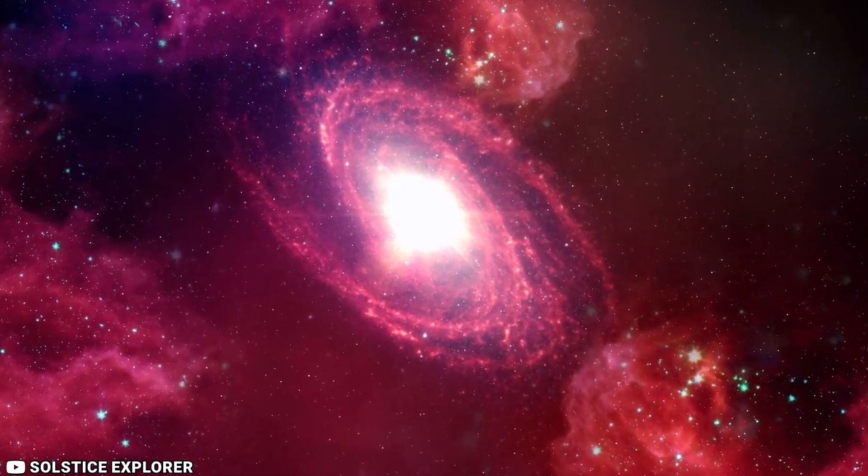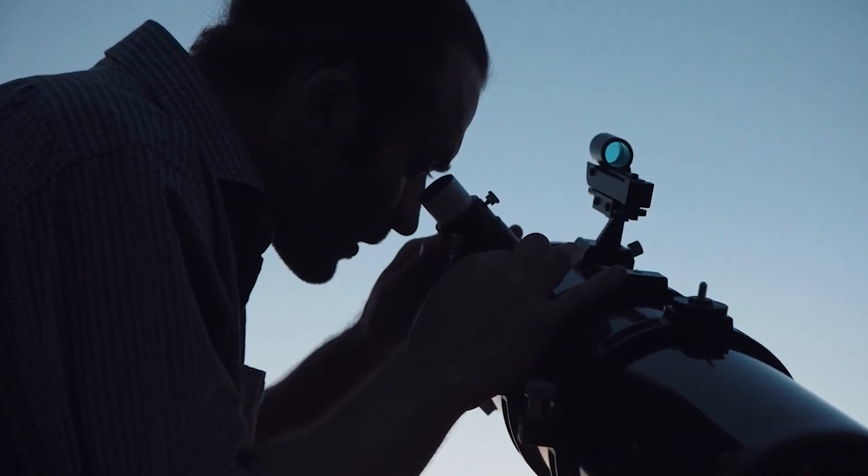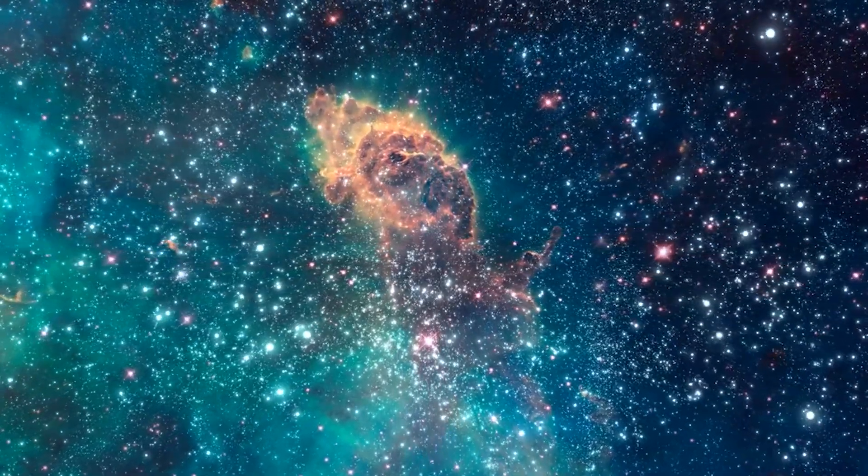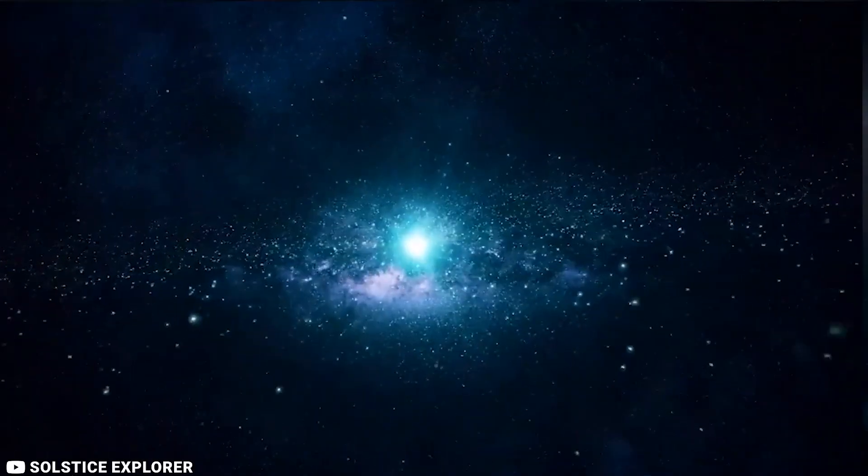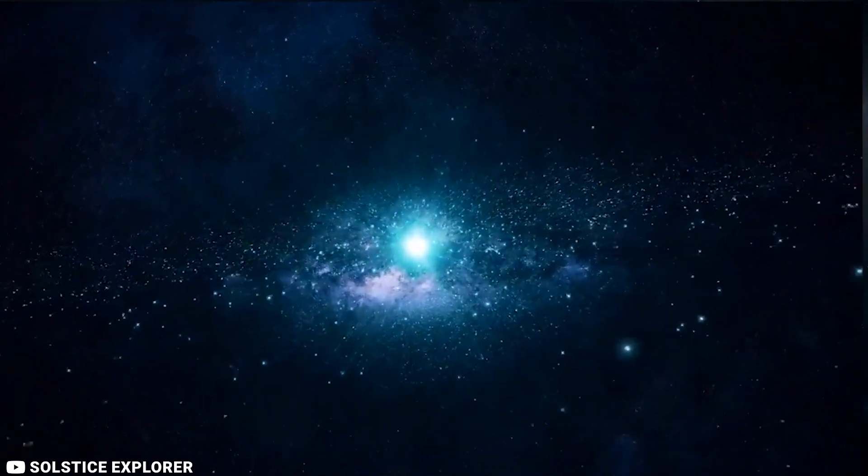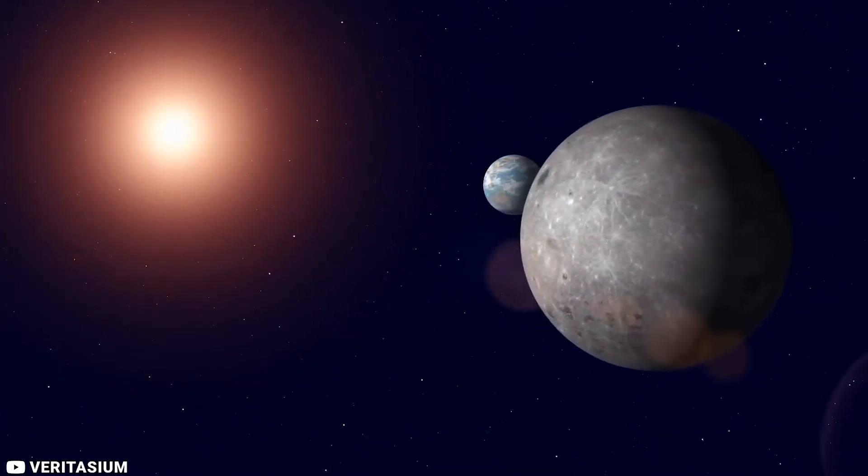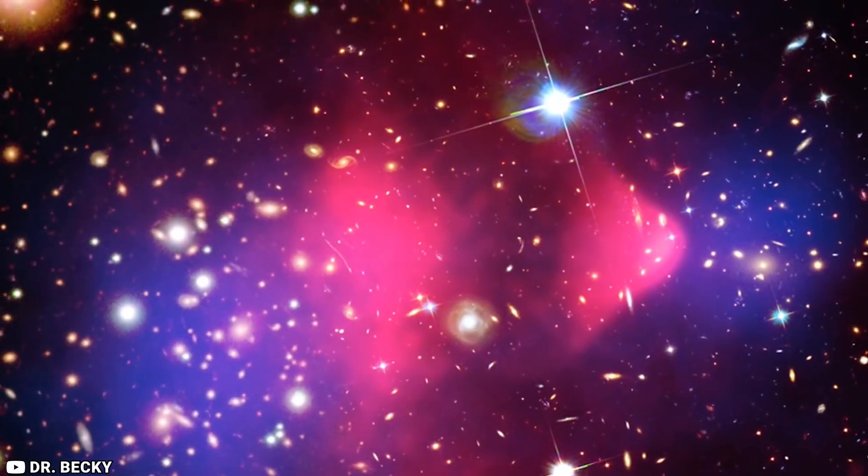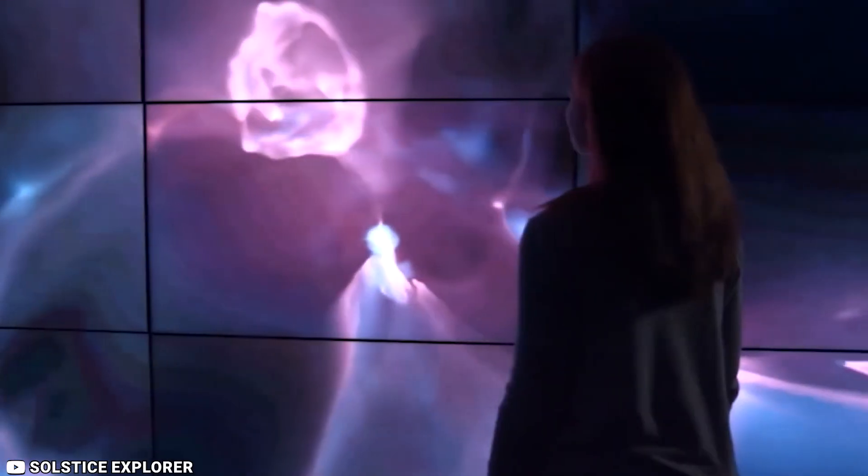Though commonly attributed to Einstein, it was actually Galileo who first concluded that when released together in the absence of an atmosphere, all objects will fall at the same rate regardless of their mass. This discovery is central to the theory of general relativity. To put this notion to the test, Apollo 15 astronaut David Scott conducted a now famous experiment on the lunar surface. A hammer and a feather, dropped by astronaut Scott at the same moment, fell to the ground and made contact at the same instant.